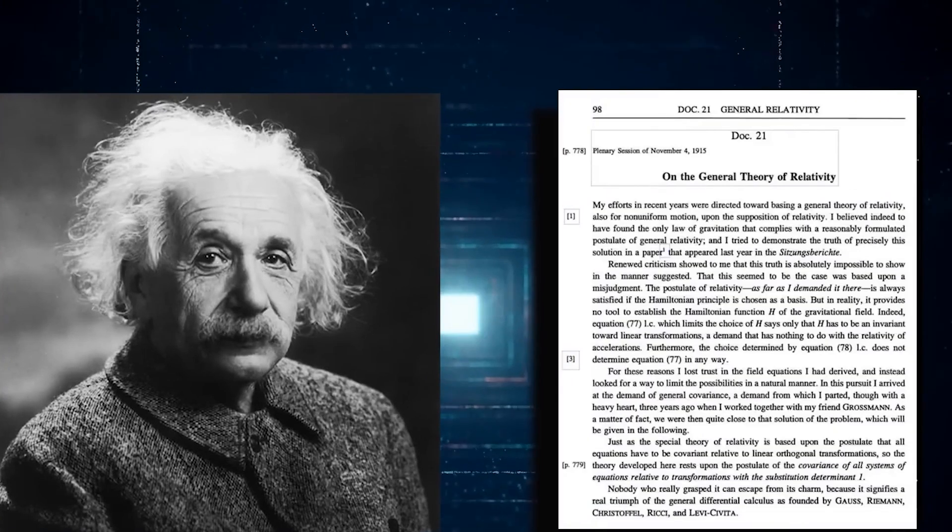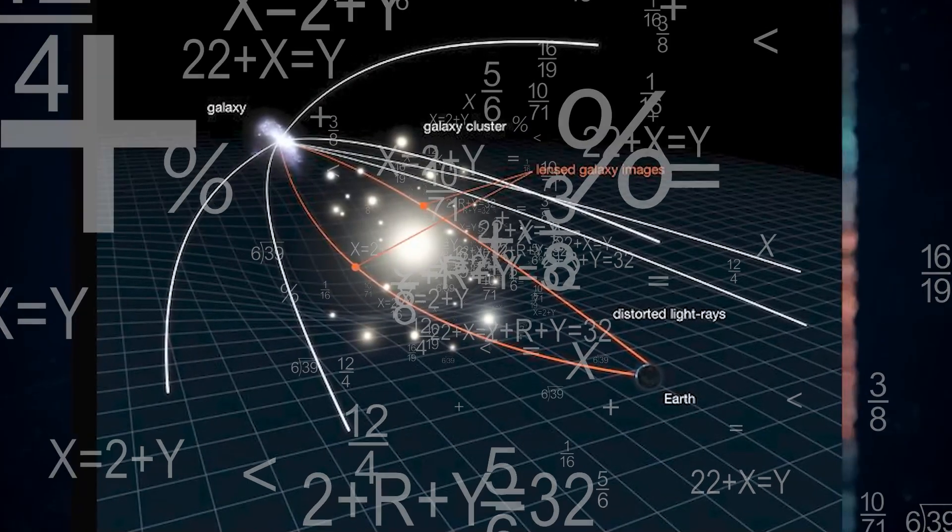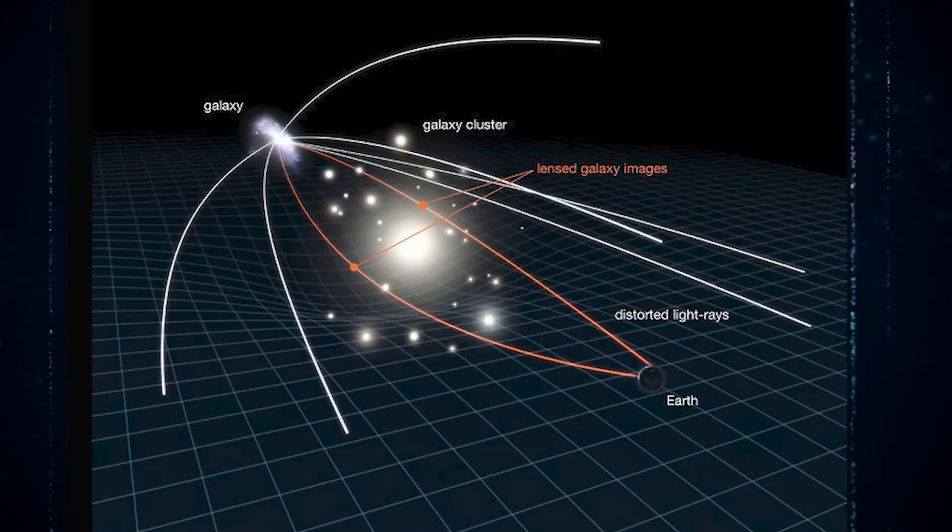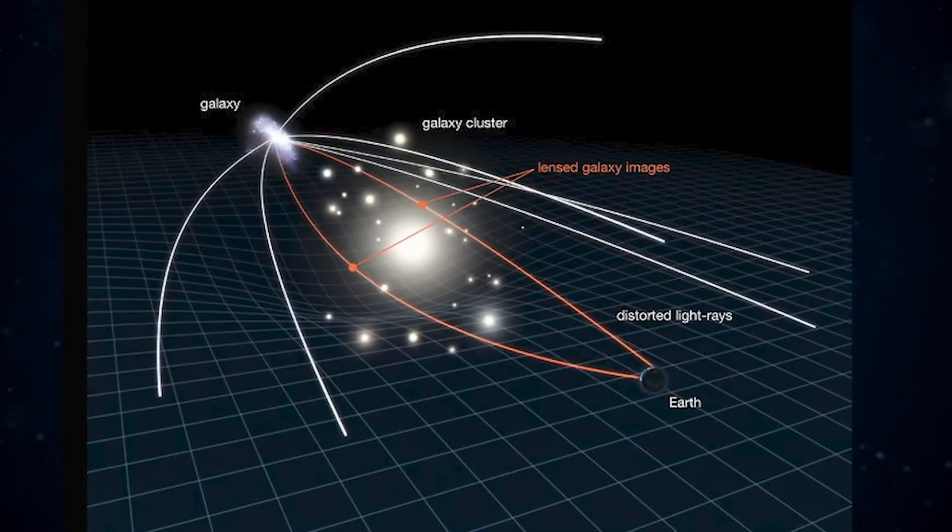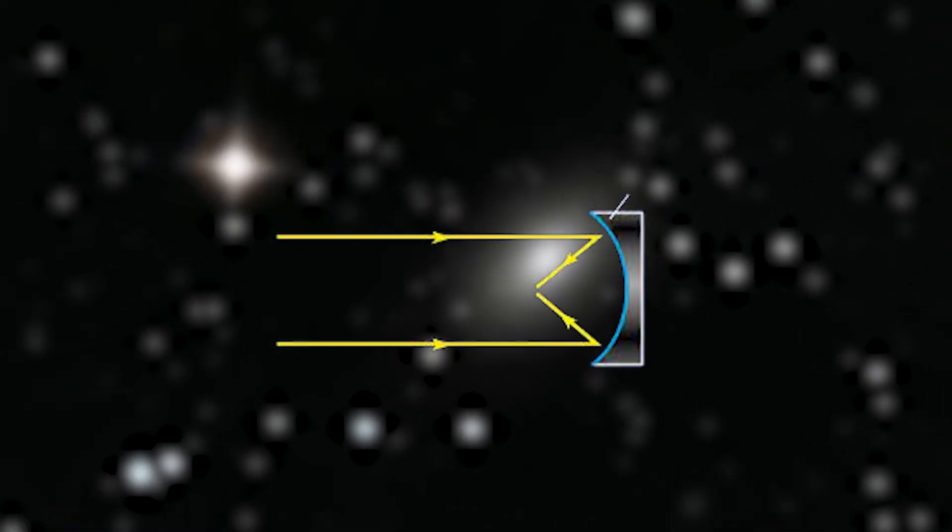Even Albert Einstein looked into the theory of gravitational lensing when he was working on his general theory of relativity in the early 20th century. According to the various concepts of mathematics, the presence of a large celestial body could bend passing light rays. This would be quite similar to how a glass lens bends light in a telescope or a microscope.